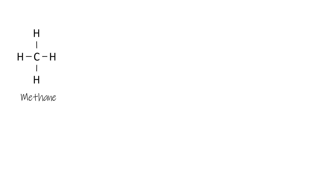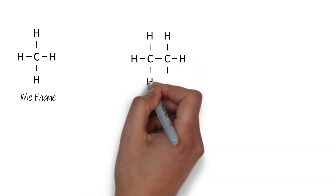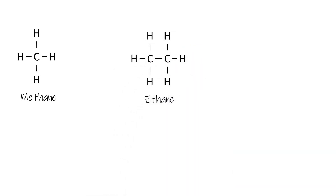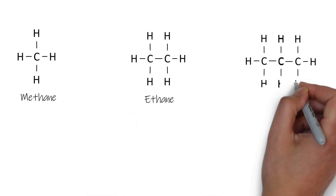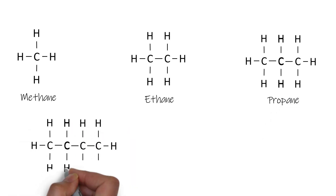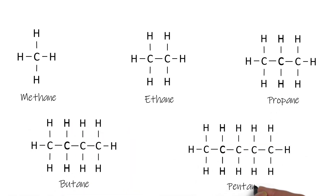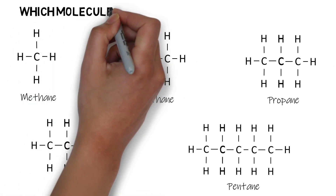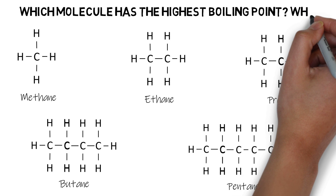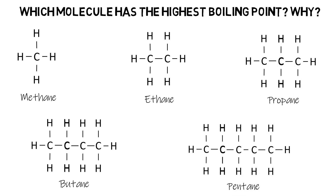If we look at a few simple covalent compounds, we've got methane, ethane, propane — notice they are getting bigger, the chain of carbon atoms is getting longer, the molecules are getting bigger. We've got butane and pentane. So which one is going to have the highest boiling point, and why? To understand that we need to know about intermolecular forces.